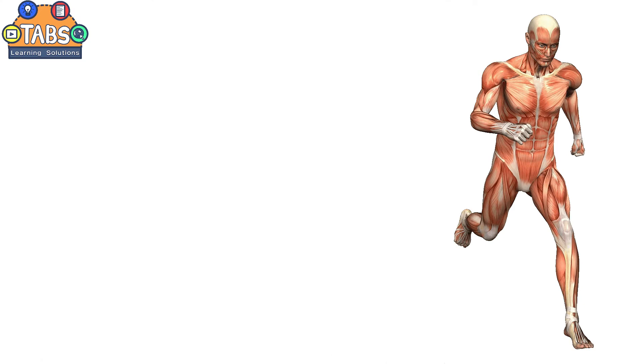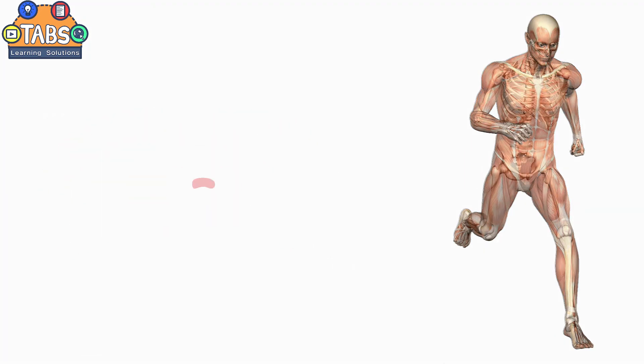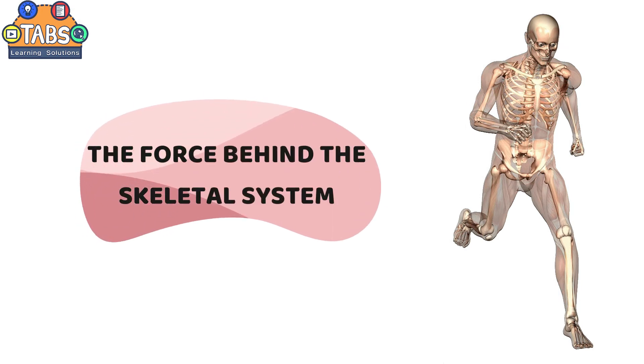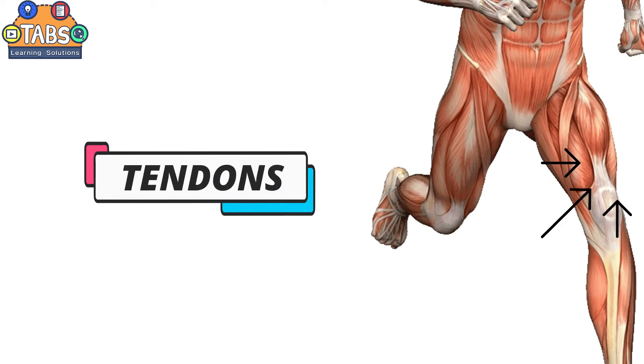The human body consists of more than 600 major muscles. These muscles are the force behind the skeletal system. Muscles and bones are connected by a tough, flexible cord called tendons.